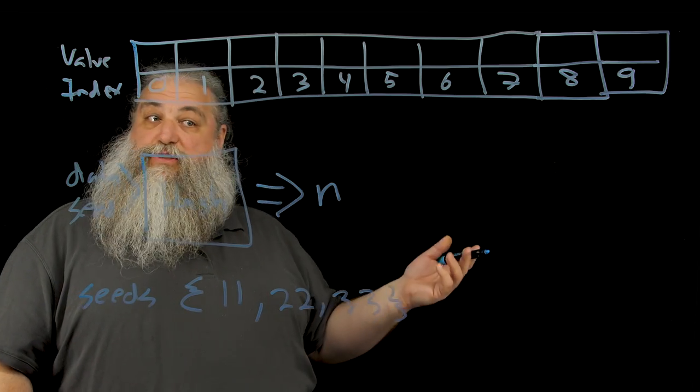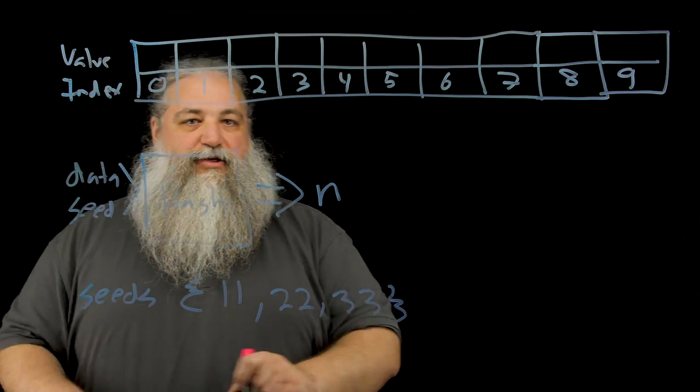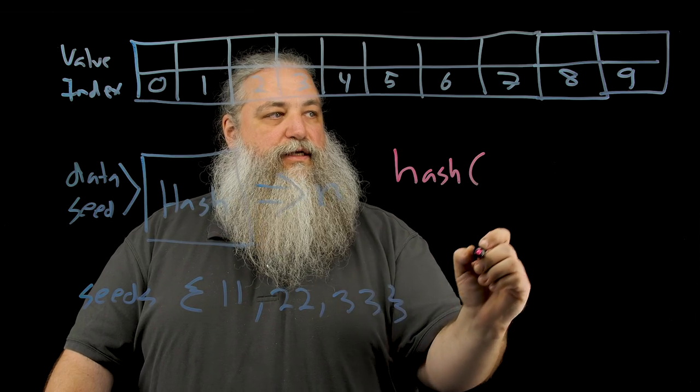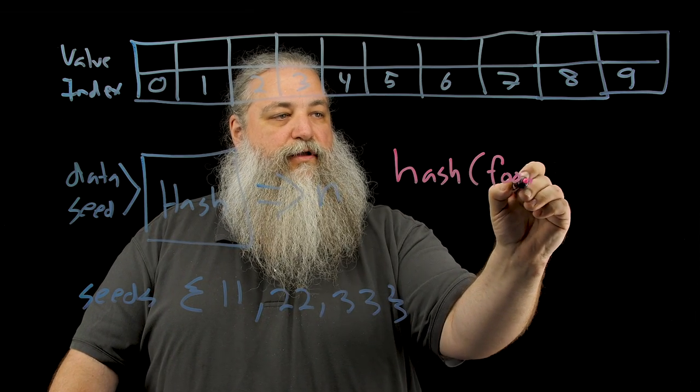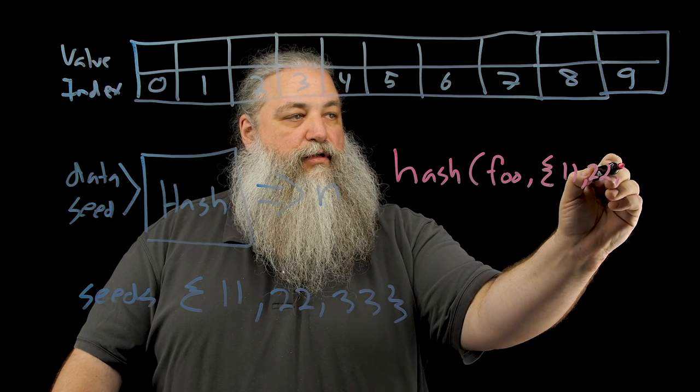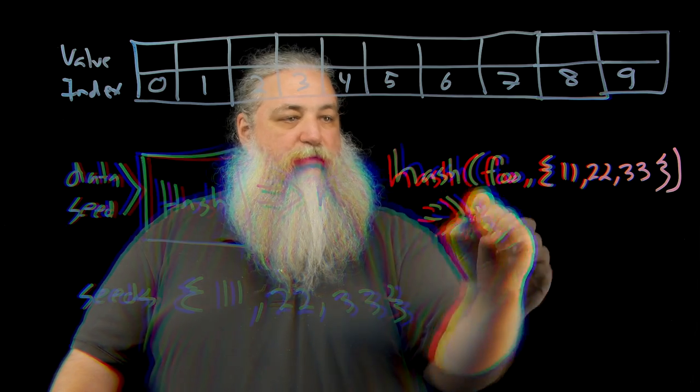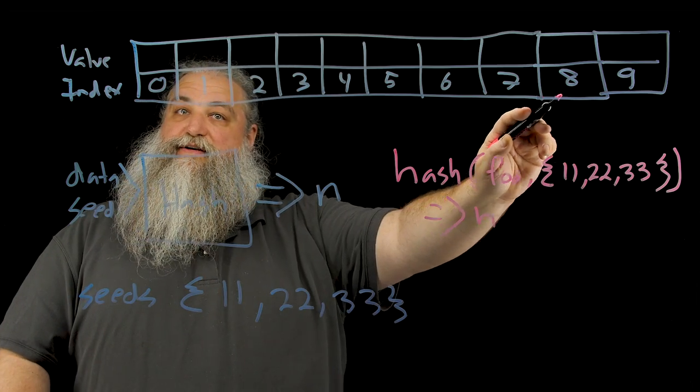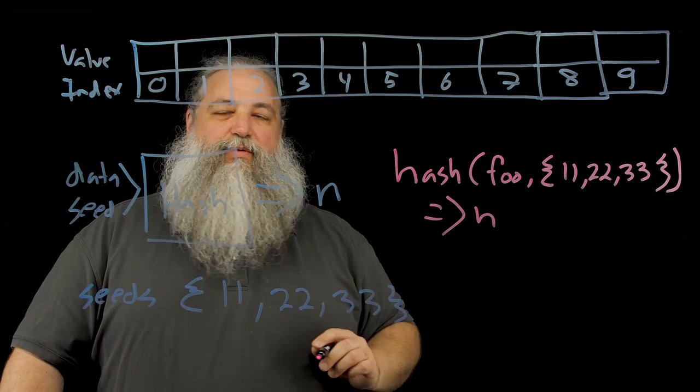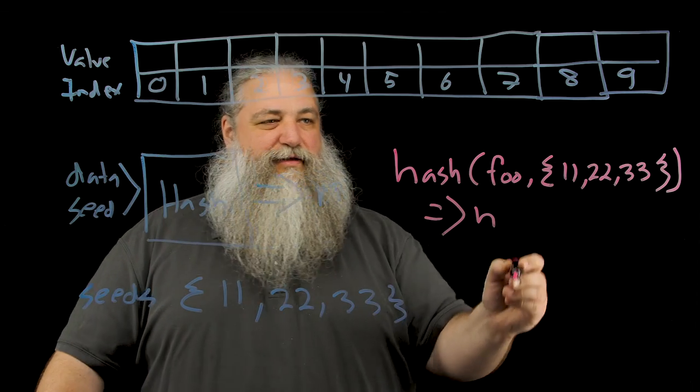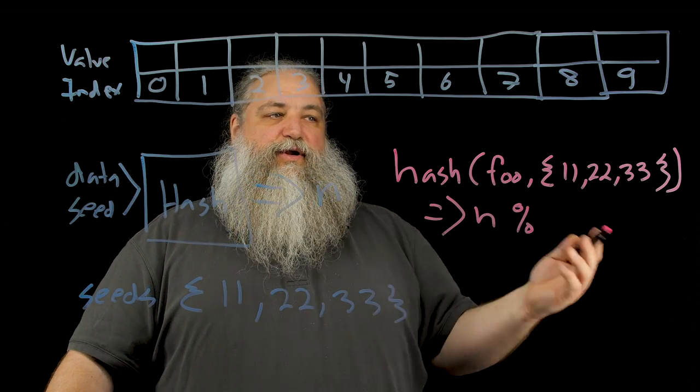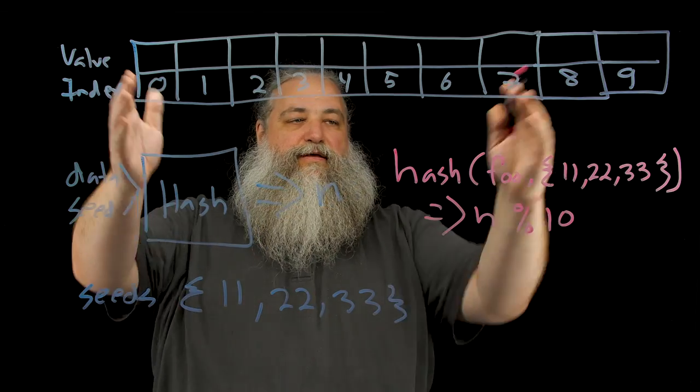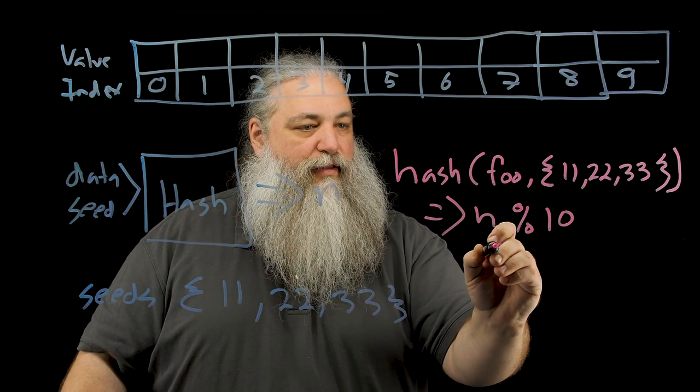The way this works is actually surprisingly simple. All you do is you take your data and you run it through the hash function. So hash, pass in the value, let's say foo here, pass in our seeds. So 11, 22, 33. And then that's going to give us a number, n. Now we want to use that number as the index in this bit vector, and we're going to set the bits high where it's at. But this number is going to be like a 32-bit number. It's going to be too big. So we're going to take it through a modulus. And then we're going to get a smaller number, something from zero to nine, because we're going to do modulus 10 on it. 10 is the width of this guy up here. And so when we do modulus 10, that should yield.